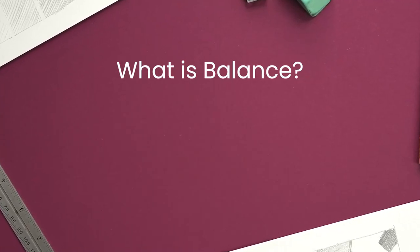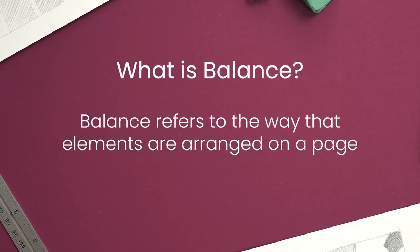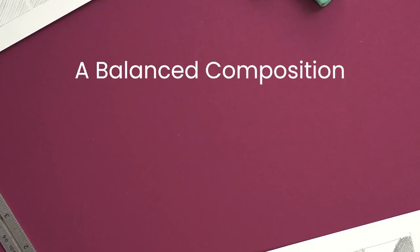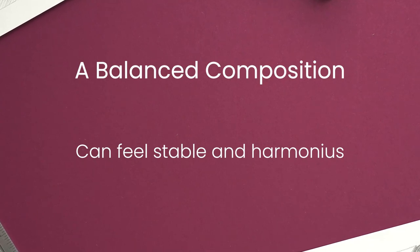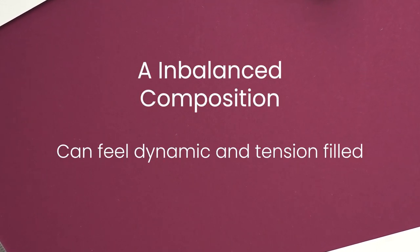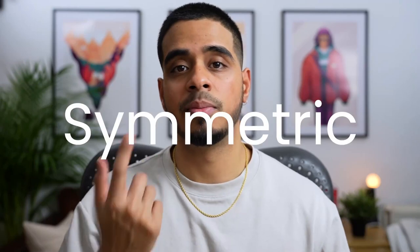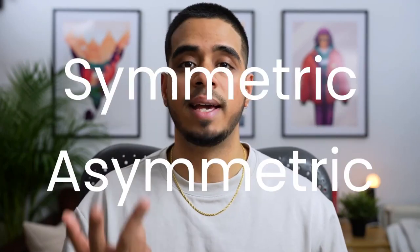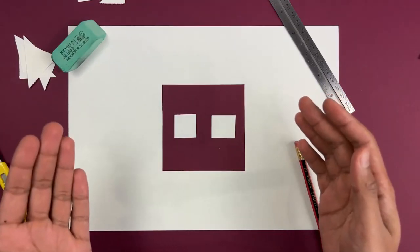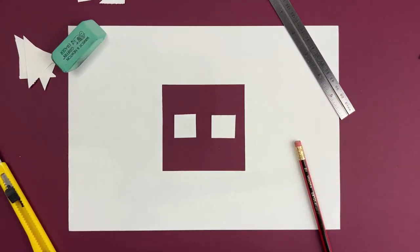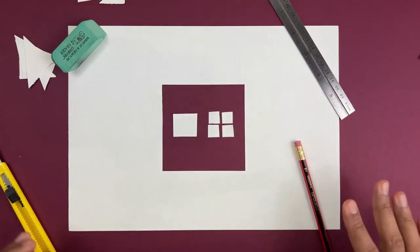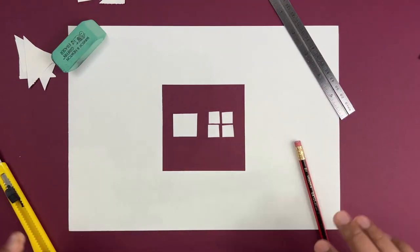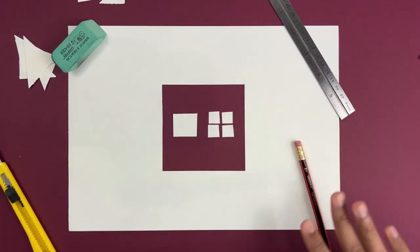So what is balance? Balance refers to the way elements are arranged on a page. A balanced composition can feel stable and harmonious, while an imbalanced composition can feel dynamic and tension-filled. There are two main types of balance: symmetrical and asymmetrical. Symmetrical means both sides are identical, and asymmetrical is where both sides are completely different but the overall drawing or painting feels balanced.